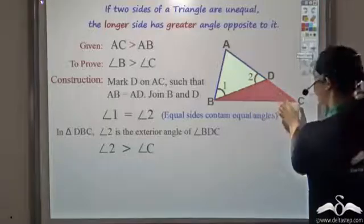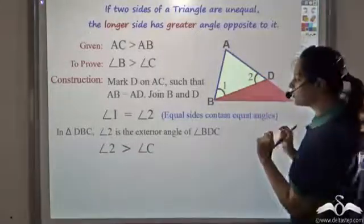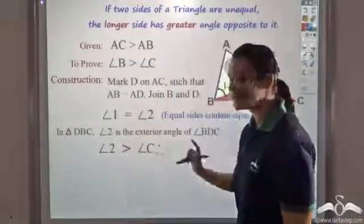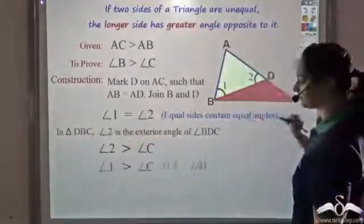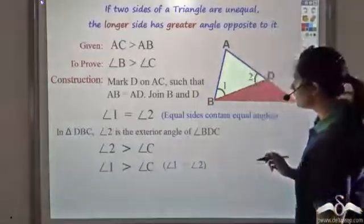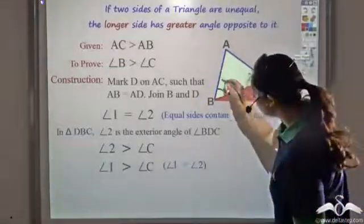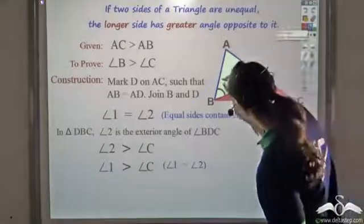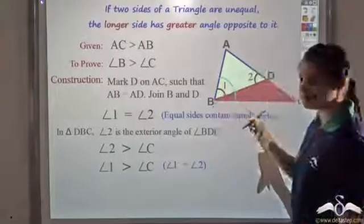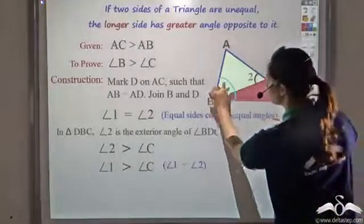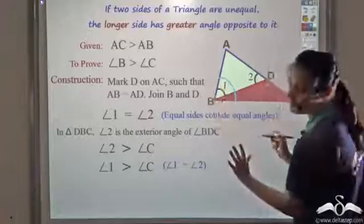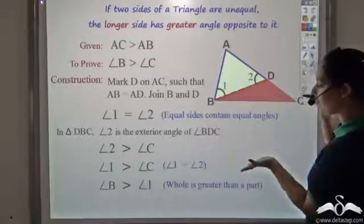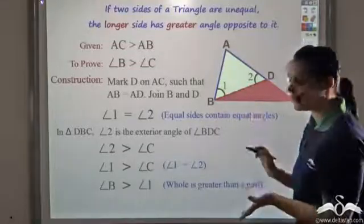Angle 2 is greater than angle C, and angle 1 is equal to angle 2. So I can say angle 1 is greater than angle C. Now, angle 1 is just a part of angle B — the whole angle B contains angle 1 as a small part. So angle B is greater than angle 1, because the whole is greater than the part.